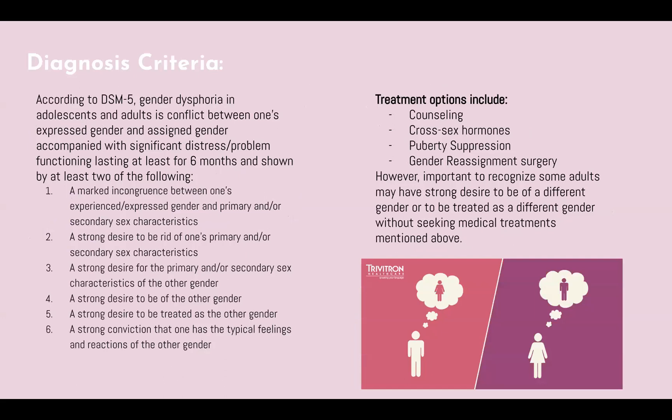To be more specific, the DSM-5 defines gender dysphoria in adolescents and adults as a conflict between one's expressed and assigned gender accompanied by significant distress and problems functioning, lasting at least six months, shown by at least two of the following criteria: a marked incongruence between one's experienced and expressed gender and primary or secondary sex characteristics; a strong desire to be rid of one's primary and/or secondary sex characteristics; a strong desire for the primary and/or secondary sex characteristics of the other gender; a strong desire to be of the other gender; a strong desire to be treated as the other gender; or a strong conviction that one has the typical feelings and reactions of the other gender.